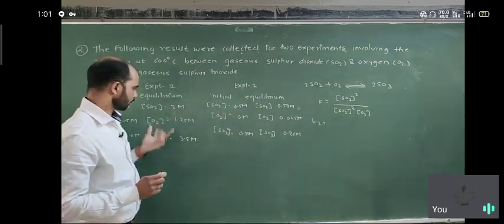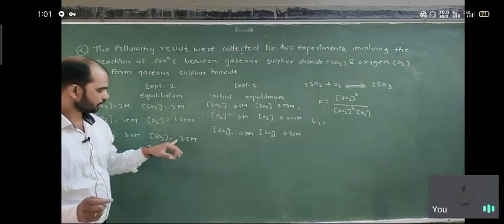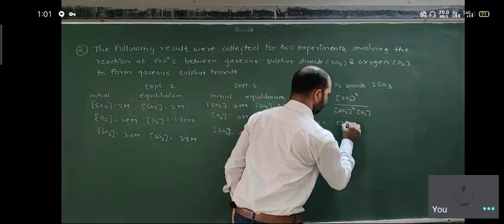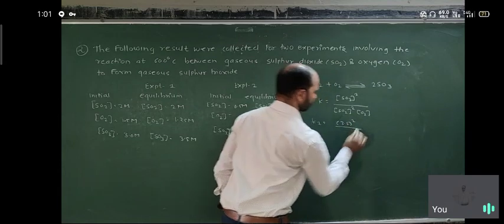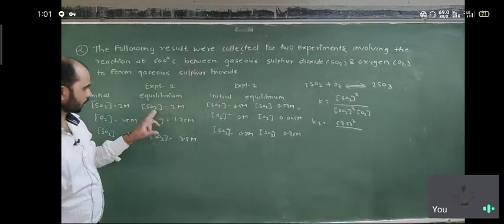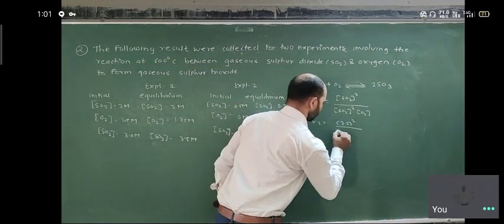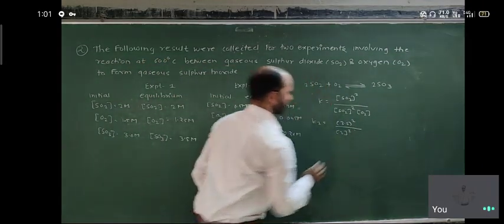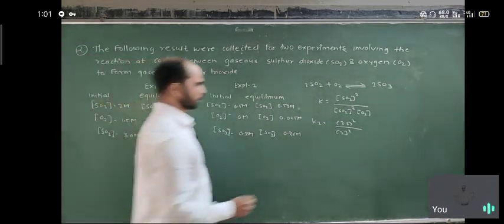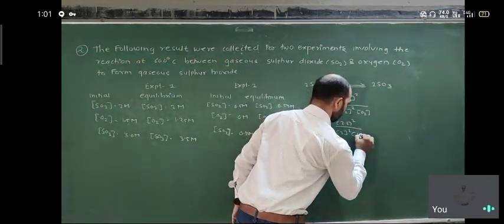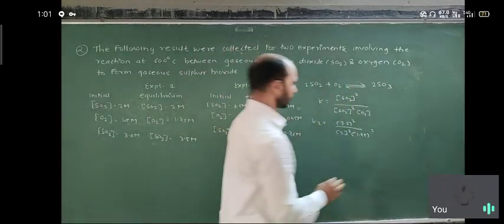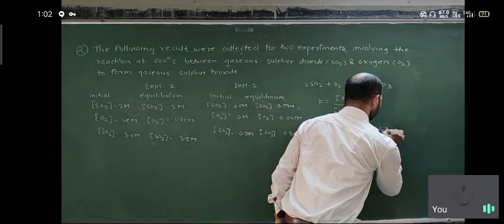For experiment number one, the concentration of SO₃ is 3.5. So we have 3.5 squared upon the concentration of SO₂, which is 2, squared, times the concentration of O₂, which is 1.25. The answer for K1 is 4.36.